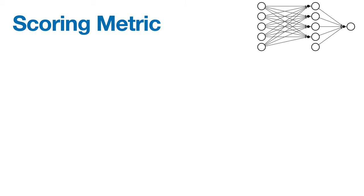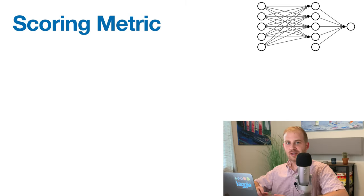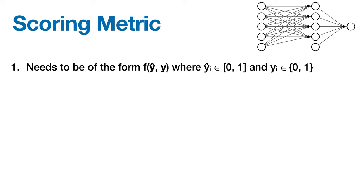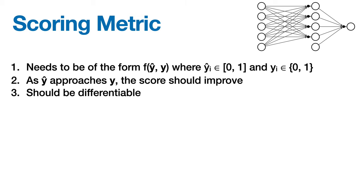Next, we'll address our scoring metric. We can't use accuracy rate, not only because it isn't differentiable, but now that we're applying the logistic function to the output node, our model is going to output a continuous range of values between 0 and 1, which aren't valid inputs for calculating accuracy rate. So, we need a scoring metric that meets the following criteria. It needs to operate on input vectors y-hat and y, where y-hat i is an element in the range 0 to 1, and yi is an element in the set 0 to 1. The closer y-hat i is to yi, the better the score should be, and it should be differentiable. With this criteria in mind, what scoring metric pops into your head?